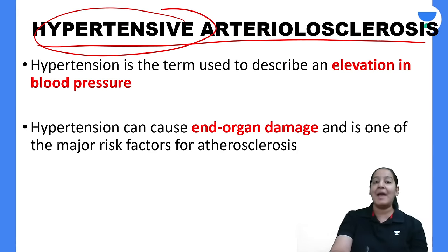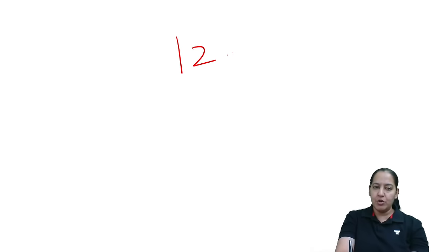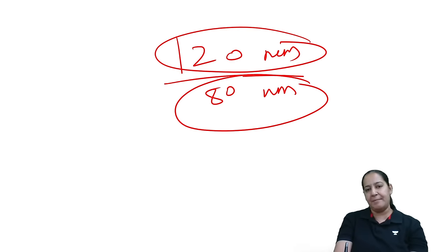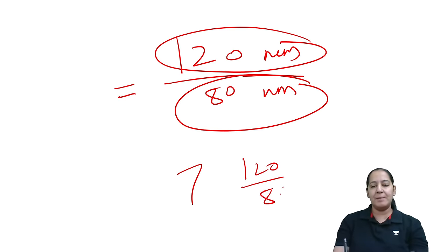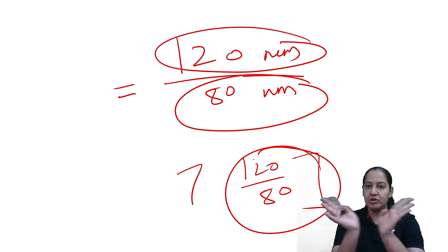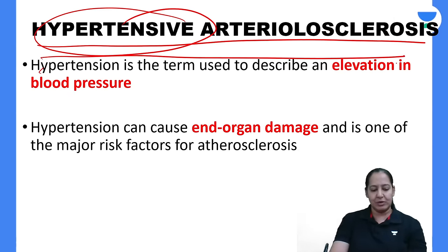What is hypertension? Normal blood pressure in humans is 120/80 mmHg — systolic 120 and diastolic 80. Whenever a person has blood pressure consistently above 120/80 and remains untreated, the increased pressure continuously exerts force on the wall of the blood vessel, causing damage. This disease is known as hypertensive arteriosclerosis.